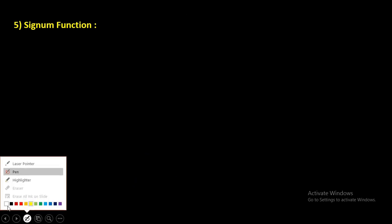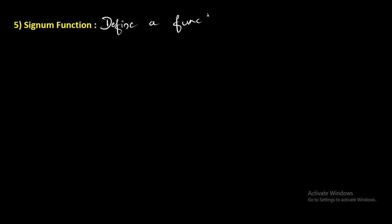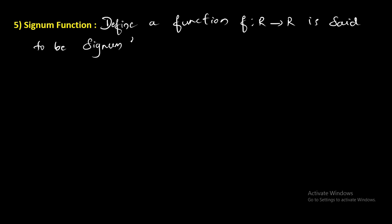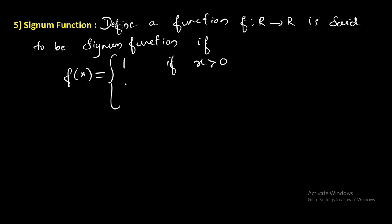Number five: signum function. Define a function f from real numbers to real numbers, which is said to be signum function if f of x equals 1 if x is greater than 0, 0 if x is equal to 0, and minus 1 if x is less than 0.